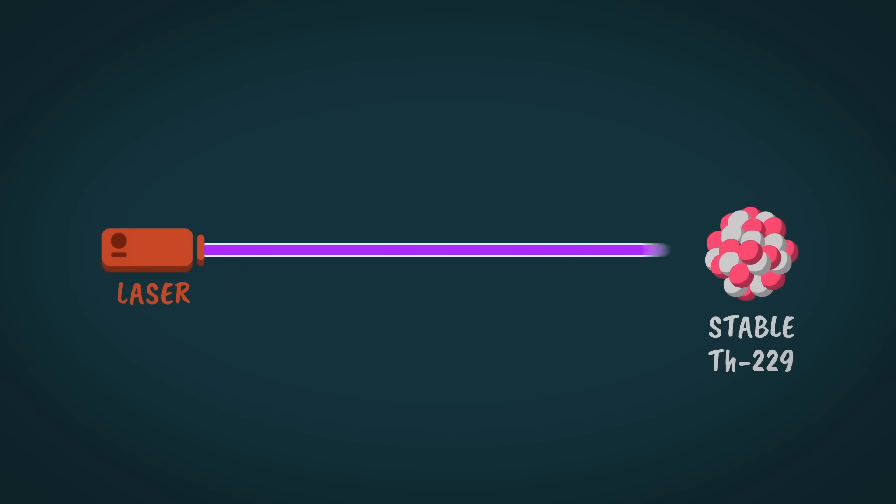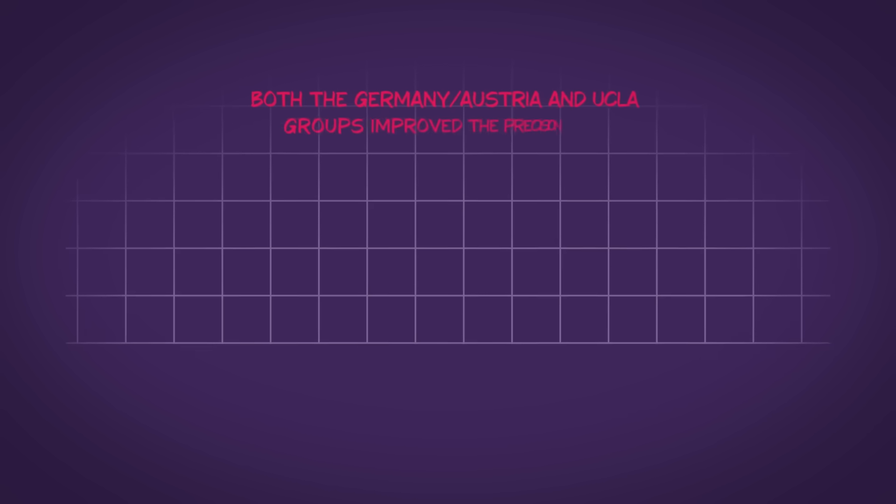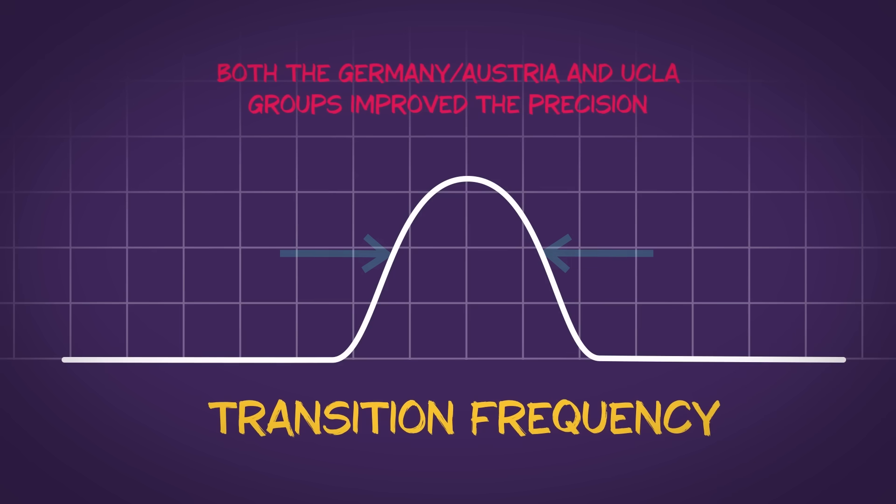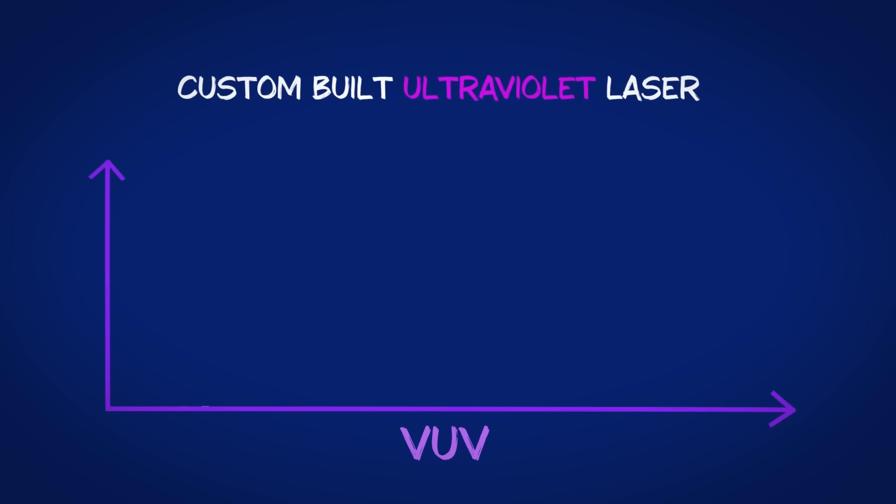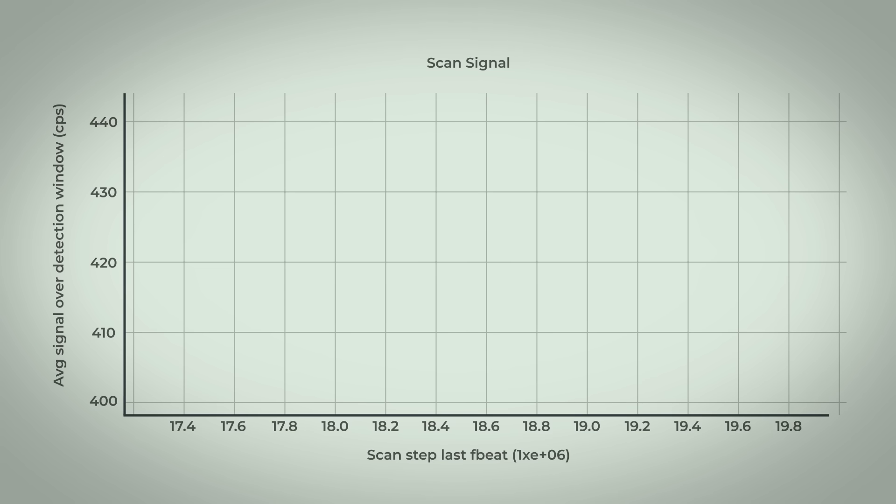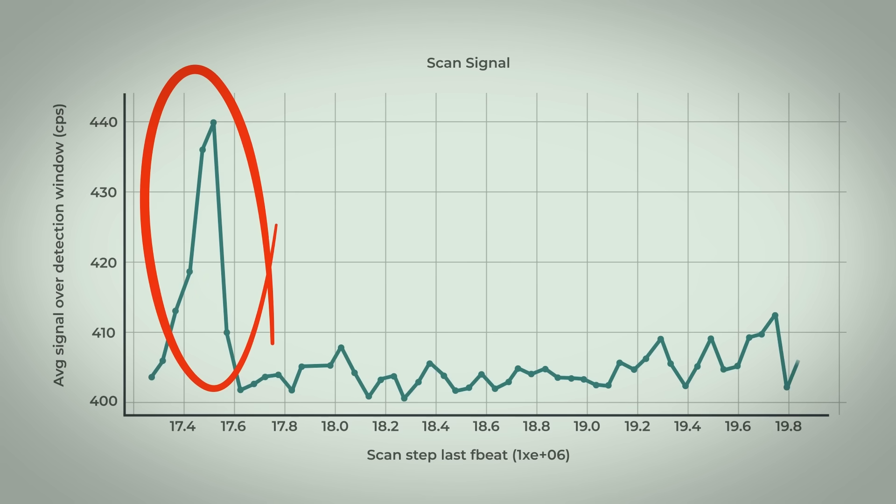In April, a team from Germany and Austria were the first to excite the transition with a laser. In July, scientists at UCLA confirmed the result, improving the CERN frequency precision by a factor of 1,000. And in September, a third experiment made a breakthrough when they measured the transition using a special, custom-built ultraviolet laser. The frequency comb laser allowed them to be 1 million times more precise than the previous two experiments. And that's what this is, the long-sought-after transition frequency from the thorium nucleus.